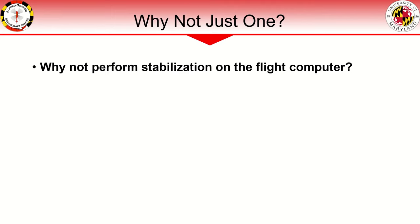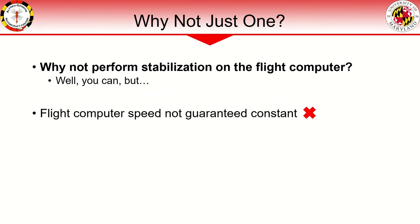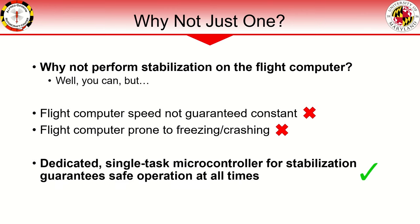You might rightfully be asking: why not just do everything on the flight computer? You certainly can, and many companies such as DJI do that with their custom boards to save power and weight, but if you are assembling your own system you may run into some problems. First, the flight computer speed is not guaranteed constant, which is a problem for stabilizing a vehicle that requires constant high-speed operation to stay in the air. A flight computer's CPU may become overloaded if excessive computations are demanded from computer vision algorithms, which can slow down the whole system or even crash it entirely. So generally speaking, it is best to have a dedicated single-task microcontroller for stabilization that guarantees the vehicle will be stabilized regardless of the health of the flight computer. In the event that the flight computer encounters an error, you can always switch back to the pilot transmitter to safely land the vehicle.